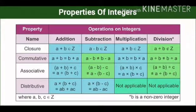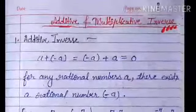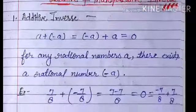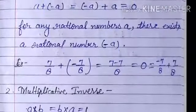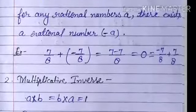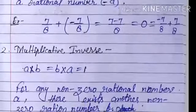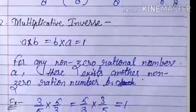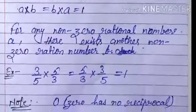Here is another important concept you must know — additive and multiplicative inverse. For additive inverse, you just find another number such that the sum equals zero; it can be a positive or negative integer. For example, minus a is the additive inverse of a, and seven upon eight is the additive inverse of minus seven upon eight. For multiplicative inverse, you find another rational number such that the multiplication equals one. For example, three upon five is the multiplicative inverse of five upon three. Remember, zero has no reciprocal.